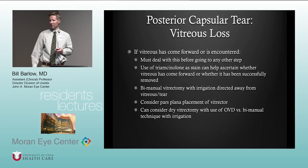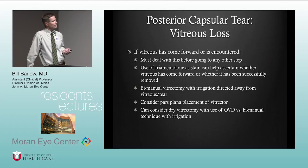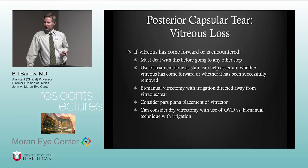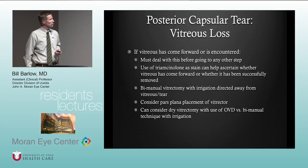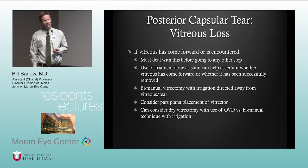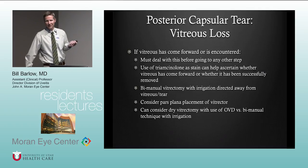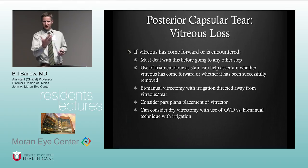If vitreous has come forward, in most cases we need to deal with it before moving to any other step. We can use triamcinolone as a stain to help ascertain whether it has come forward and whether it's been successfully removed. Use bimanual vitrectomy with irrigation directed away from the vitreous tear — similar to bimanual irrigation-aspiration, we want to separate these two so we're not irrigating into the vitreous and causing it to come forward. Coaxial vitrectomy equipment is available with some machines, but I don't encourage it — you'll basically be doing a core vitrectomy and hydrating the vitreous.